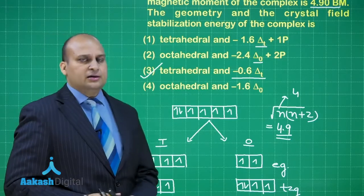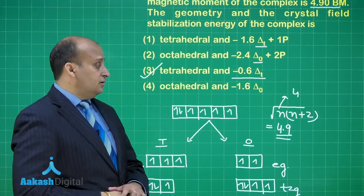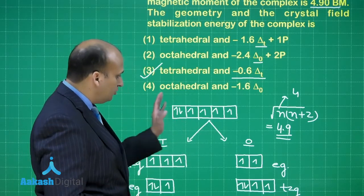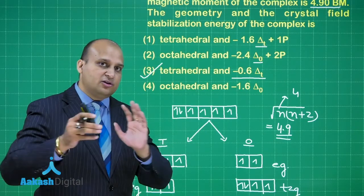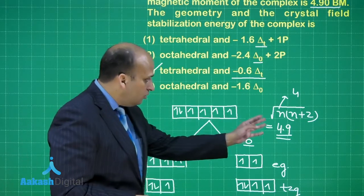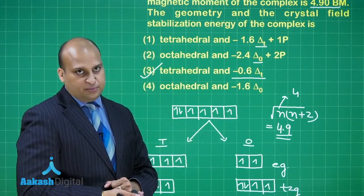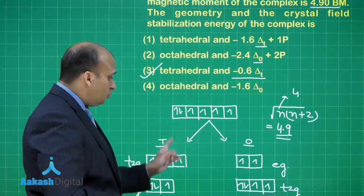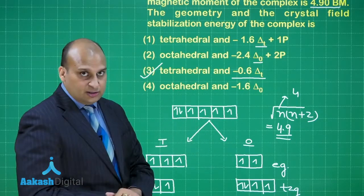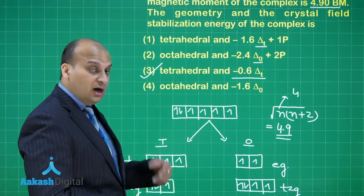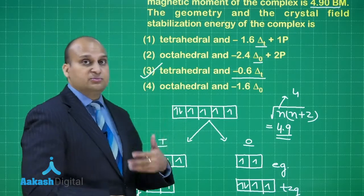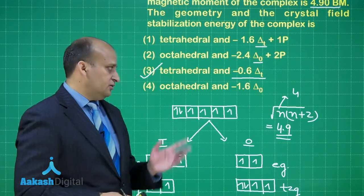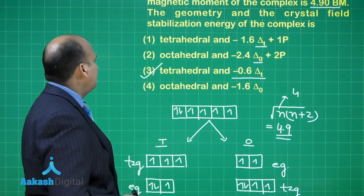I will not call it a difficult question so to say, but yes, a very good question in the sense that first it wants you to know how you are going to fill up the electrons in the d orbital. How or what is the formula of calculation of spin only magnetic moment? From there, how will you calculate the number of unpaired electrons? Then what is octahedral crystal field splitting? What is tetrahedral crystal field splitting? And then how do you calculate the crystal field splitting energies? Mixture of concepts in one question. A very good question, answer is third. Let us go to the next one.